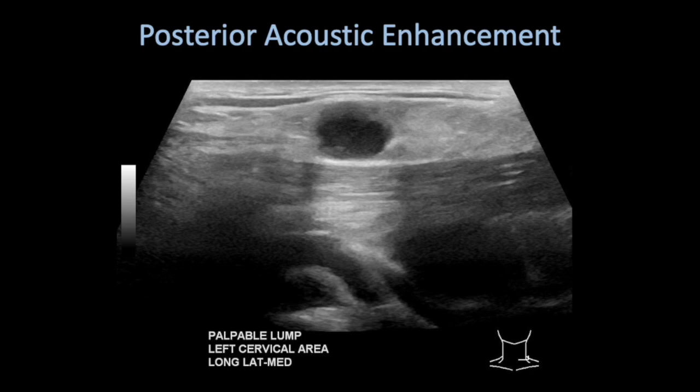It's important to keep in mind that posterior acoustic enhancement does not always mean that something is a cyst. Here's an example of an abnormal lymph node in a patient who ended up having lymphoma, where the lymph node is surrounded by fat density. The fat attenuates the sound beam much more than the soft tissue does, and therefore you get posterior acoustic enhancement.